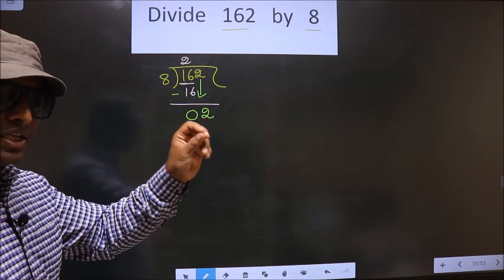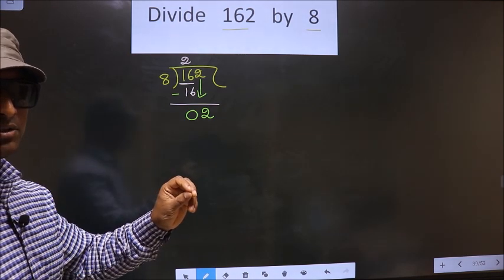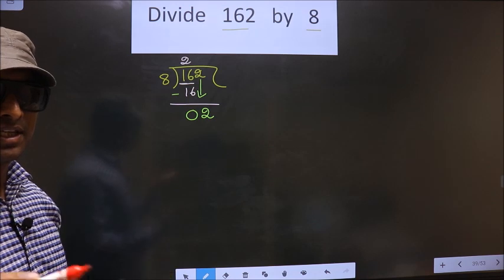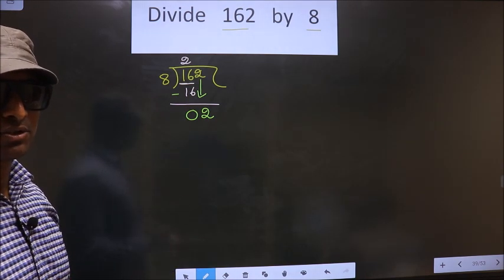I repeat. Bringing the number down and putting a dot and taking 0 both at a single step is not correct. You are not supposed to do that.